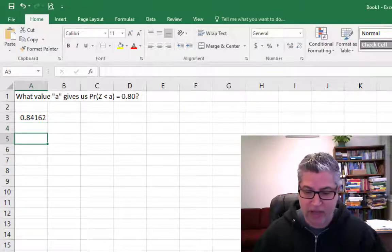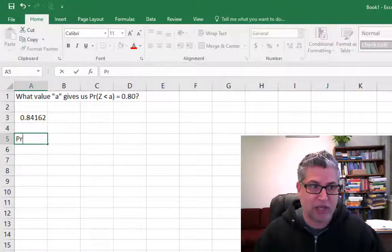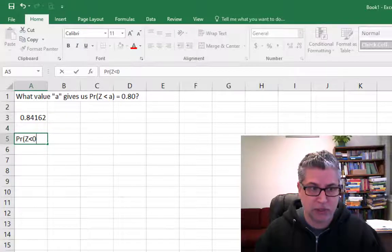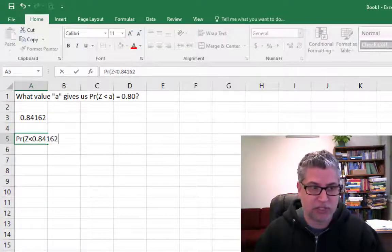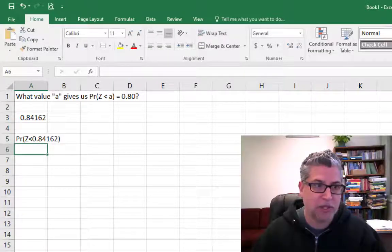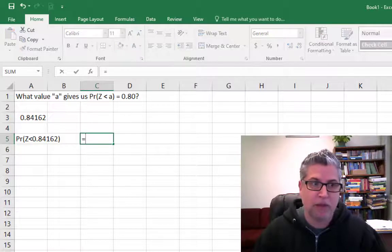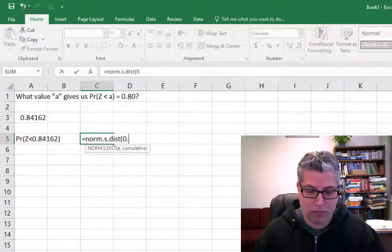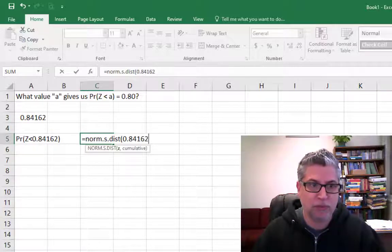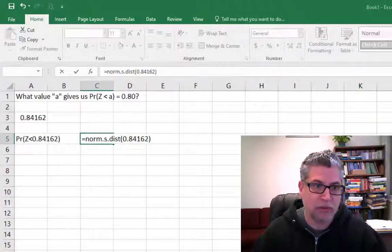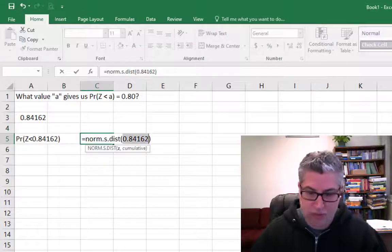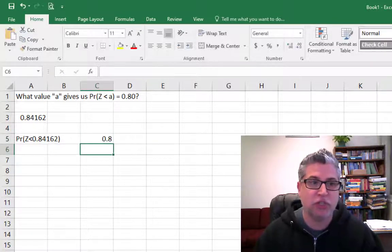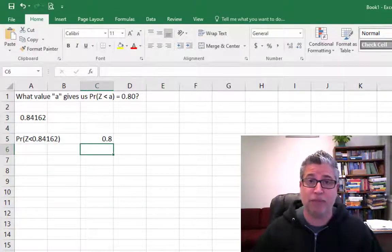So just to verify, we might just calculate directly what's the probability that z is less than 0.84162. norm s dist 0.84162. We have to indicate that we're looking for the cumulative distribution and we get back our 80%.